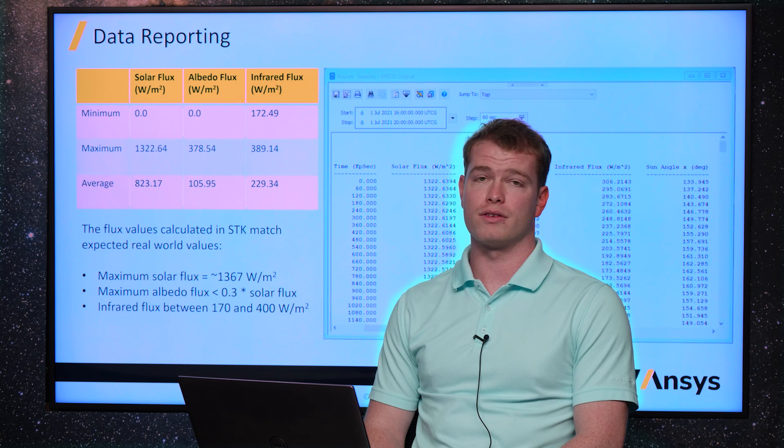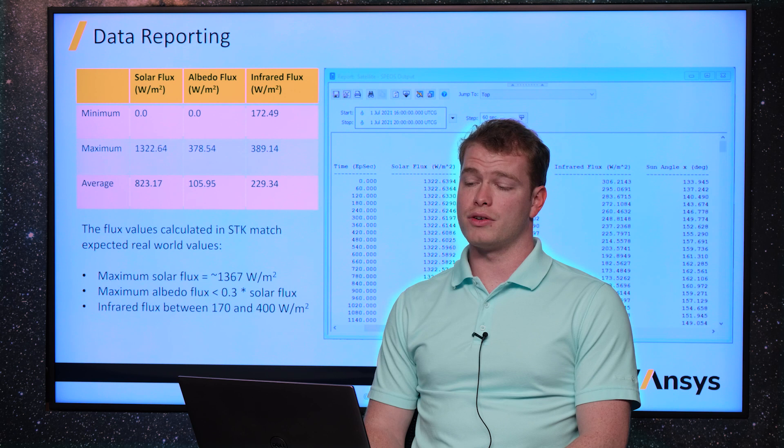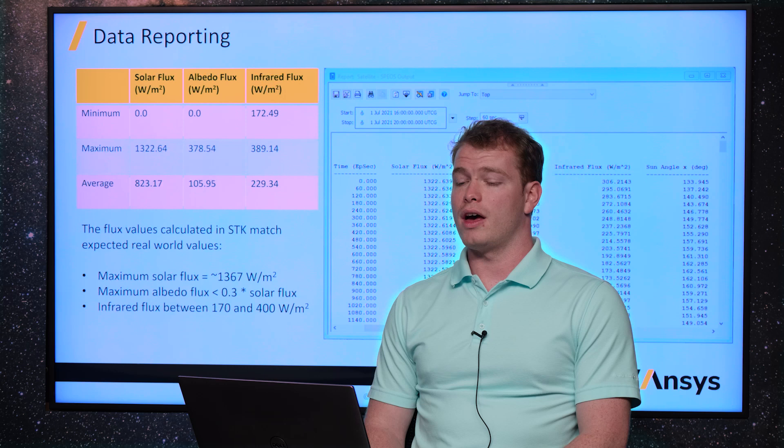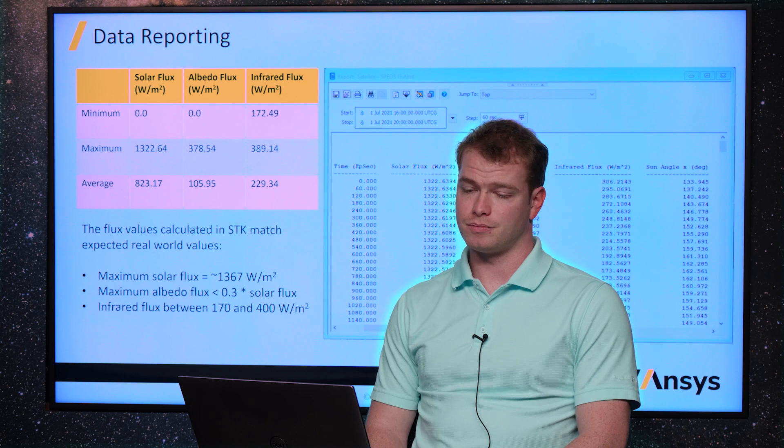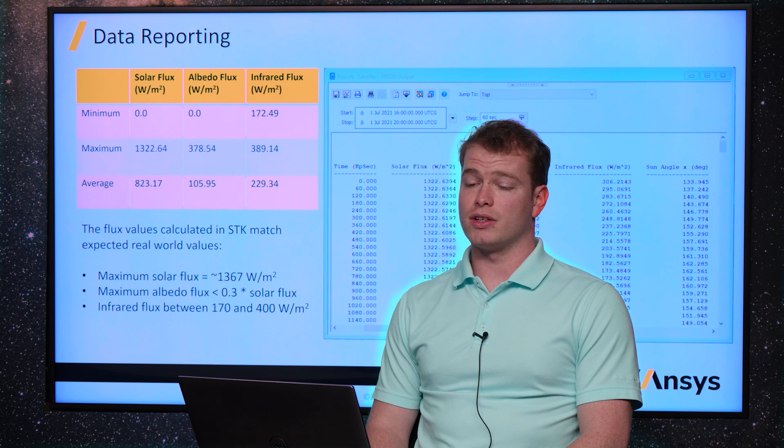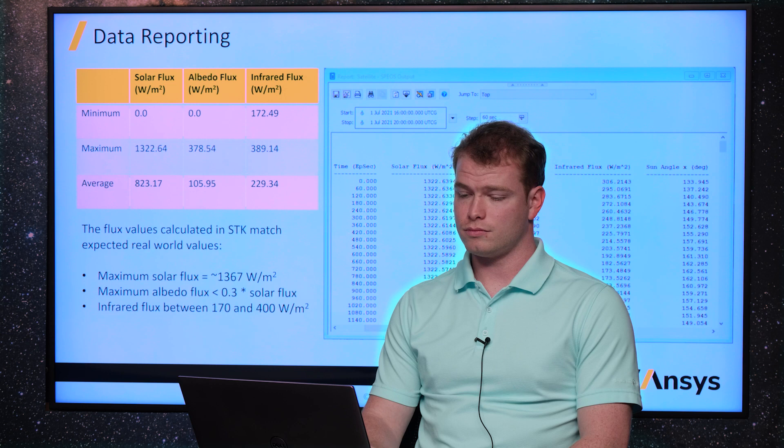So you can see an example of this report that I've generated here with the solar values we needed for both the solar flux, albedo, and infrared flux, as well as farther on in the graph that's cut off the direction angles they come from. You can see a few examples of these values in the table showing that the values calculated by STK indeed match what's expected in the real world.